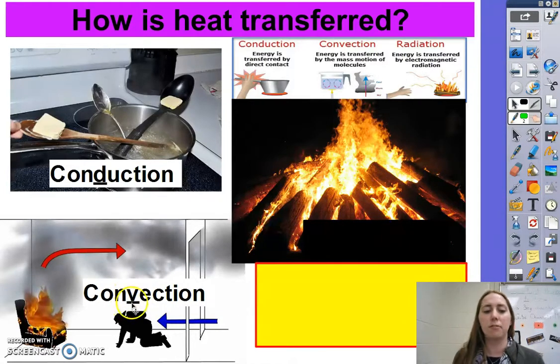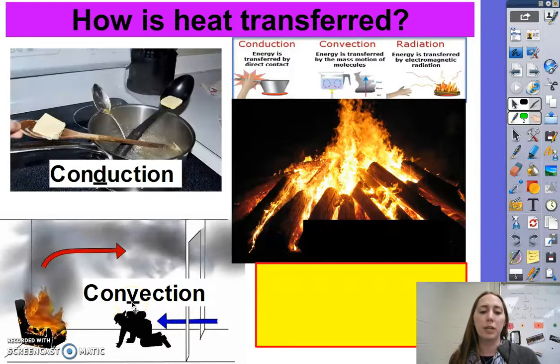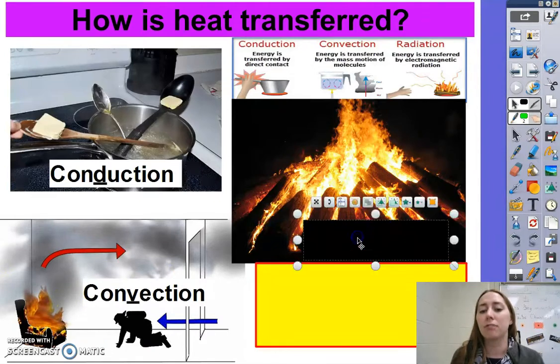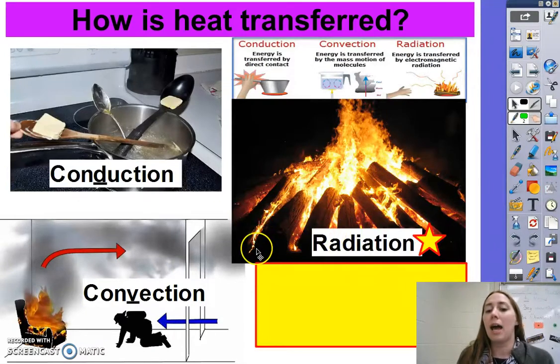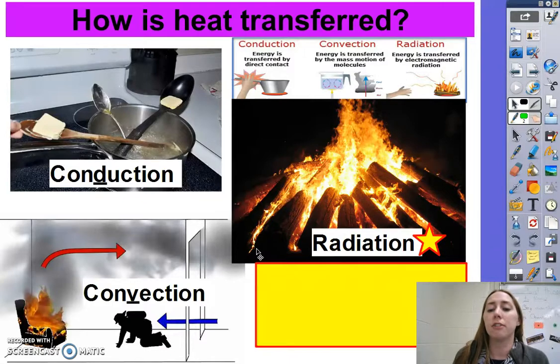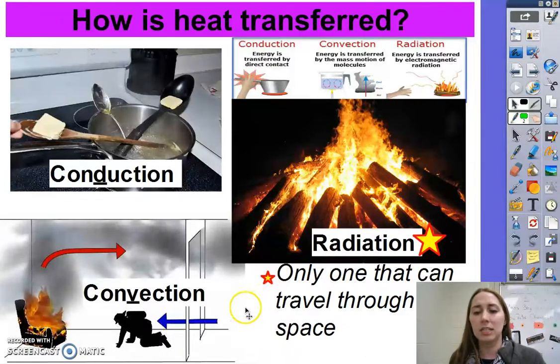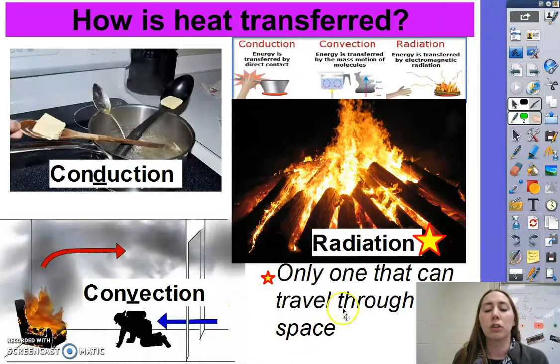Now convection, I remember the V, because it's moving, or like vents move air. Convection is the movement of heat through a fluid. And then lastly, radiation is what happens when you don't need matter to feel the heat. You don't have to be touching it, it doesn't have to be moving by you, you can just feel it. Now, radiation is special because it's the only one that can travel through space.